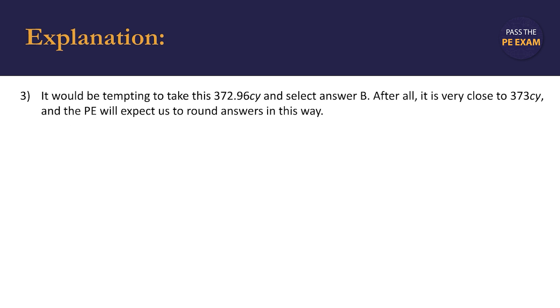Now it would be really tempting to take this 372.96 cubic yards and select answer B. After all, answer B is 373 cubic yards. This is basically 372.96 cubic yards. The PE would expect us to round answers in this way.